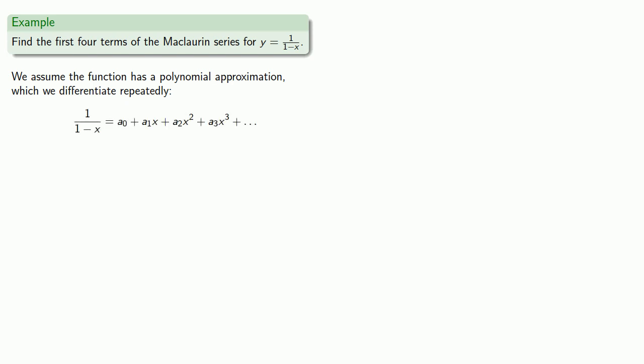To find these coefficients, we'll substitute in values of x and get a system of equations that we can solve. If we substitute x equals 0 in the left and right hand sides of our equation, we get a₀ equals 1.